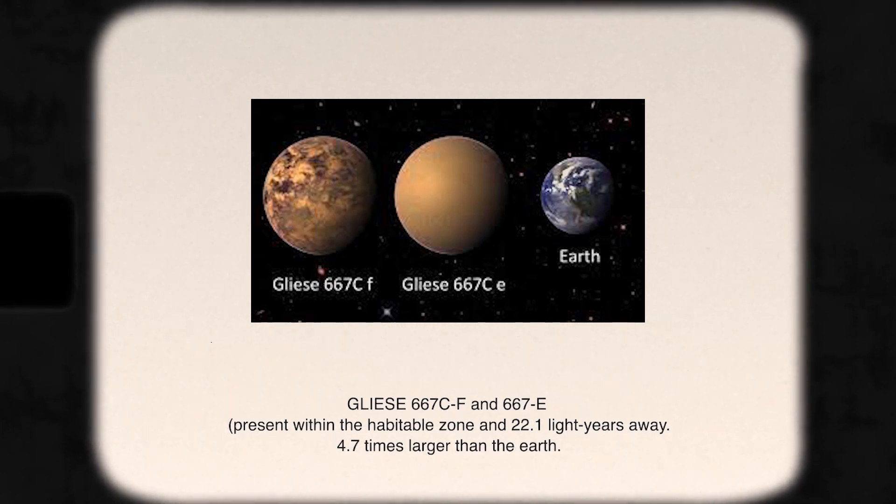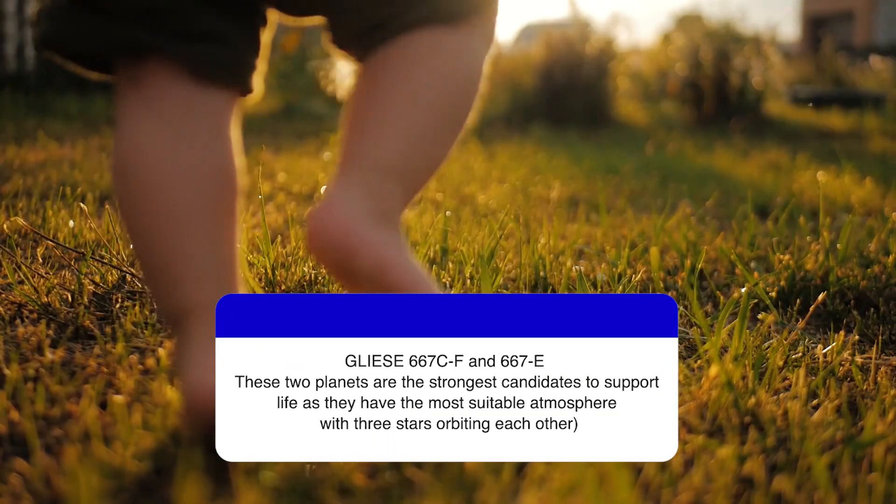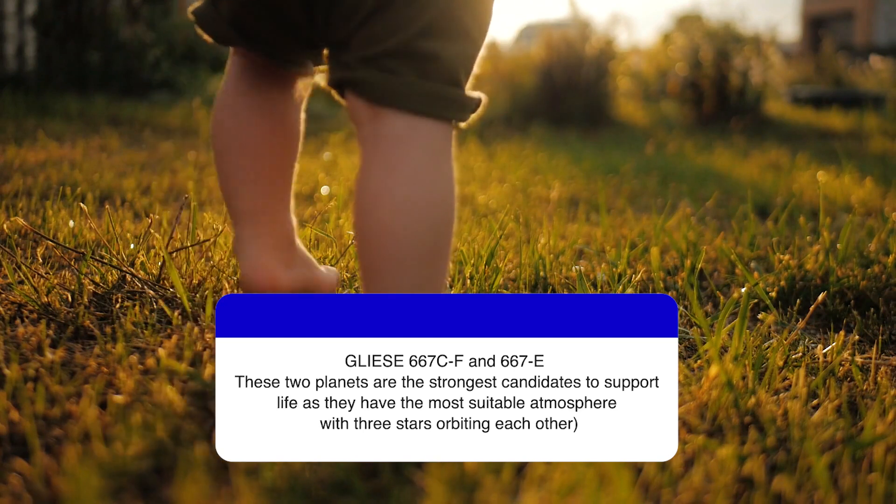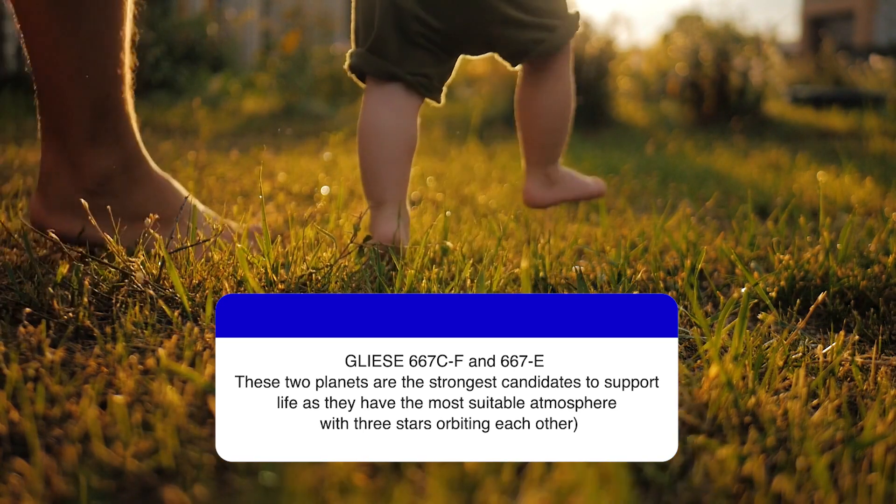Gliese 667C-F and 667C-E, present within the habitable zone and 22.1 light-years away, 4.7 times larger than the Earth. These two planets are the strongest candidates to support life as they have the most suitable atmosphere with three stars orbiting each other.